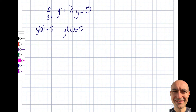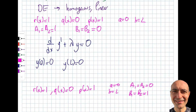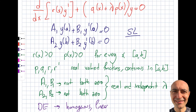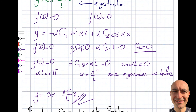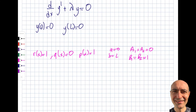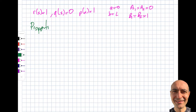For the second case: r(x) = 1, q(x) = 0, p(x) = 1, a = 0, b = L are the same, but now a1 = a2 = 0 and b1 = b2 = 1. This changes the boundary conditions to involve derivatives, giving y'(0) = 0 and y'(L) = 0 — which is exactly the second equation I dealt with. So both examples align with the regular Sturm-Liouville problem.